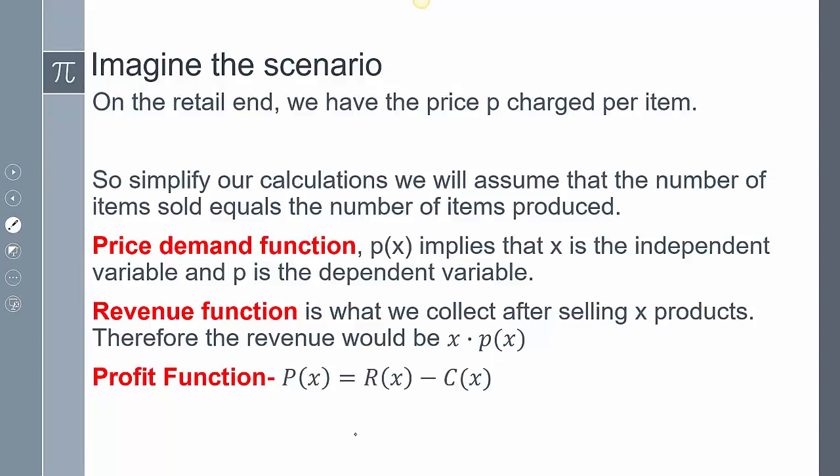On the retail end, we're going to have the price demand function, which is the demand of the item at a given price. If I set the price to this amount, this is how much I expect to sell. Or thinking the other way, if I want to sell this amount, this is how much I should charge. So it goes both ways.